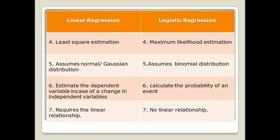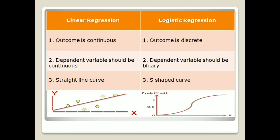The linear regression calculation is based on the least square estimation method, whereas in logistic regression it is based on maximum likelihood estimation, which is a probability count. Linear regression always assumes a normal or Gaussian distribution since the graph is a straight line, whereas logistic regression assumes the binomial distribution, which provides an S-shaped graph and is a type of probability estimate.